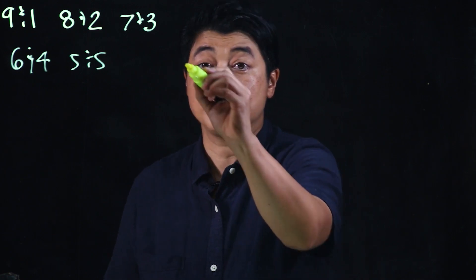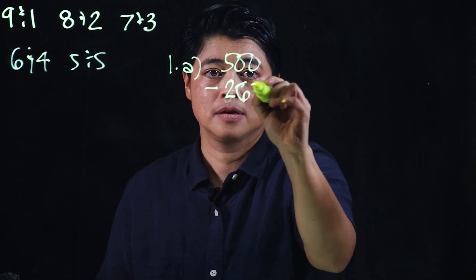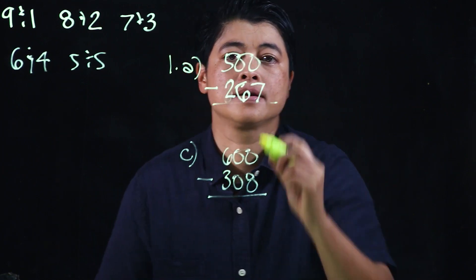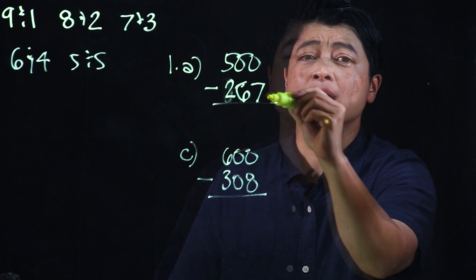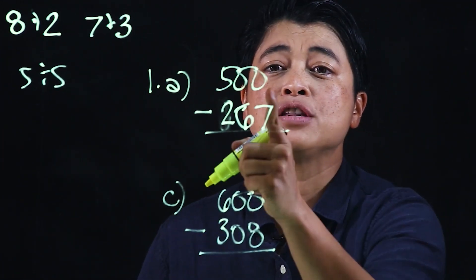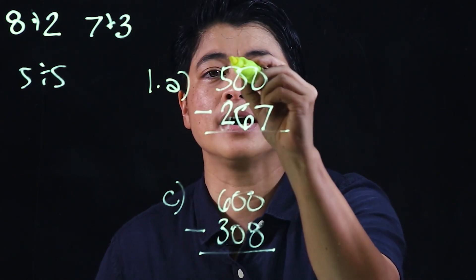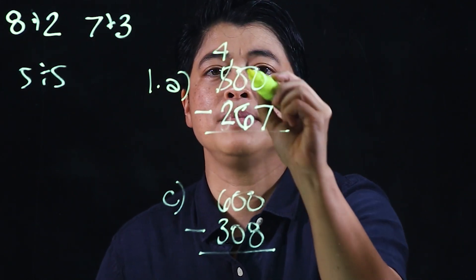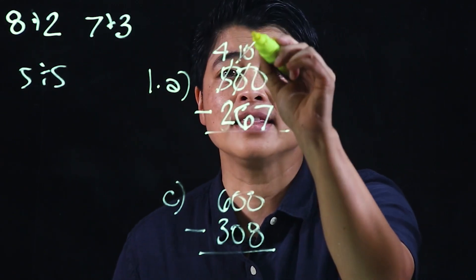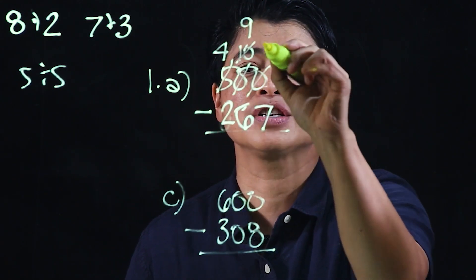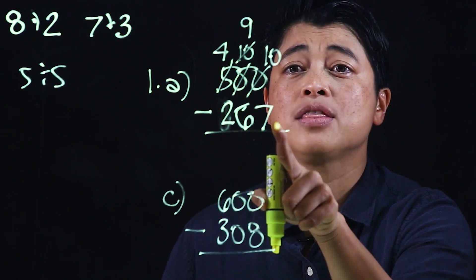So this is page 58. We need to subtract, but we cannot subtract 7 from 0, which means we need to borrow. But we can't borrow from 0, which means we need to borrow from the 5 — so that makes it 1, and that makes this 10. When we borrow from the 10, this now makes it 9, which makes the units place 10.